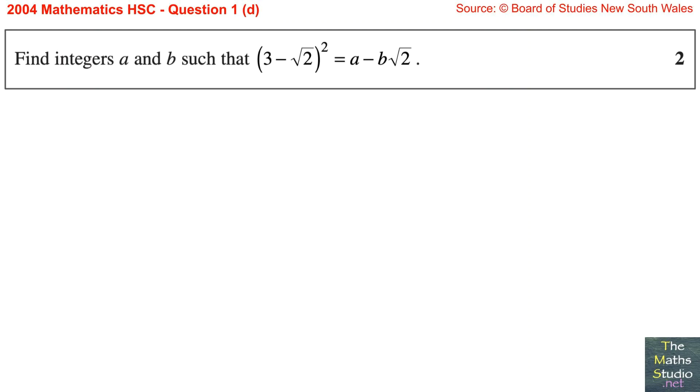Question 1, part d. Find integers a and b such that 3 minus root 2 in brackets squared equals a minus b root 2.